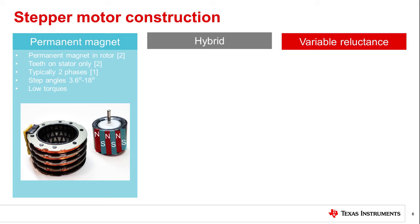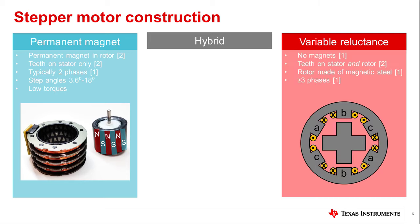Rotor motion occurs as the permanent magnet moves to align with the magnetic field of the energized winding. The variable reluctance motor does not use any permanent magnets. The rotor is made of the same magnetic steel as the stator. The variable reluctance motor gets its name because the magnetic field causes the rotor to move to a position where the air gap and magnetic reluctance are minimized. The difference in reluctance is created by the shape of the stator teeth on both the rotor and stator. The variable reluctance stepper motor typically needs at least three phase windings to effectively control the direction of rotor rotation.